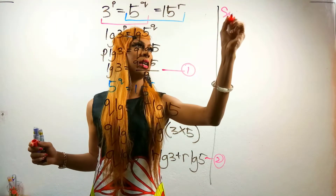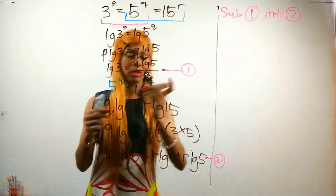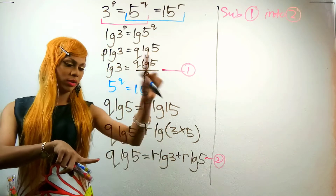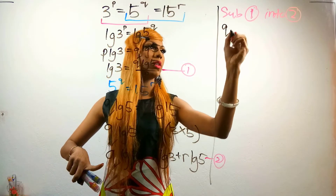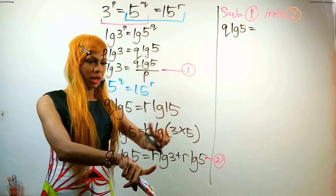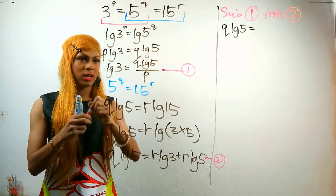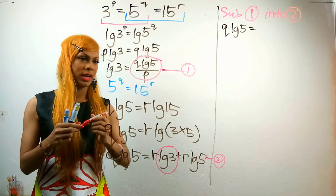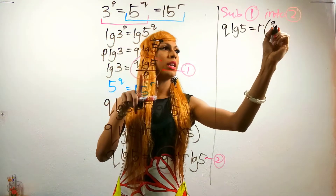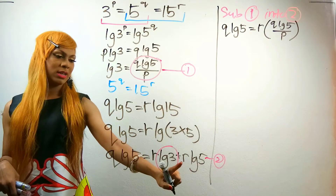So it becomes q·log 5 equivalent to r·log 3 plus r·log 5. Let's call this equation two. Now substitute equation one into equation two — equation one gives us log 3, so I'll put that in here. We have q·log 5 equivalent to r·(q·log 5 over p) plus r·log 5.